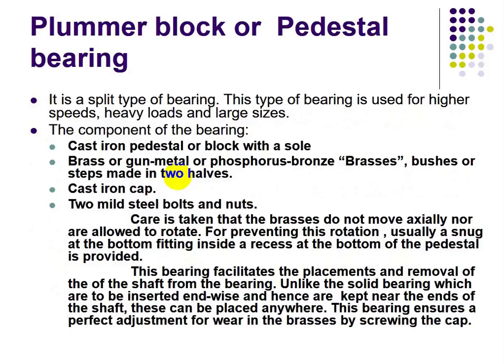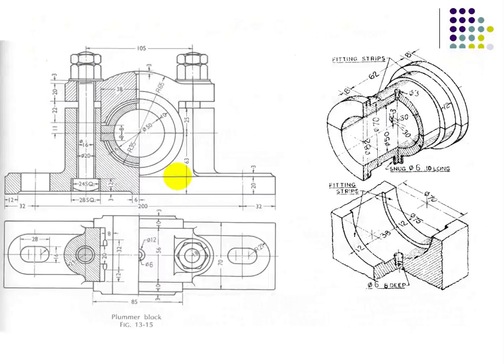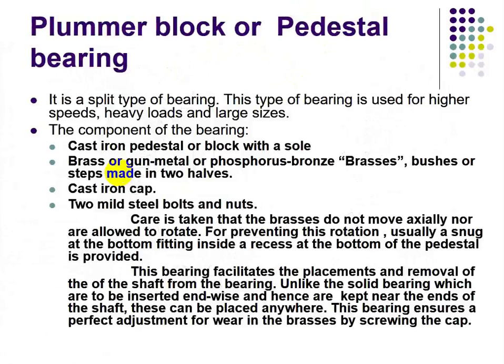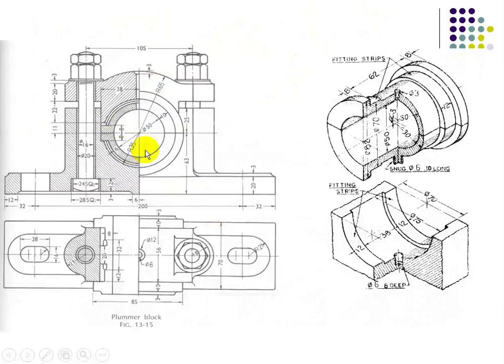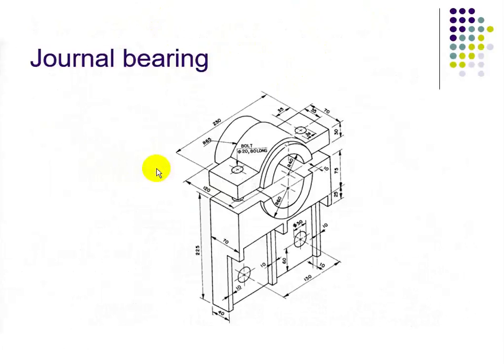The plumber block or pedestal bearing is another type of plane or sliding contact bearing. It is a split type of bearing used for higher speeds, heavy loads, and larger sizes. The components of this bearing are: a cast iron pedestal or block with a hole, brass or gun metal bush, cast iron cap, and two mild steel bolts. The figure shows the plumber block with nuts, cast iron cap, and the bush fitted inside.